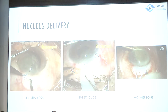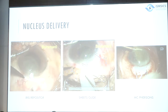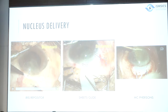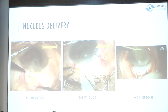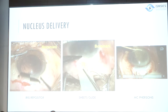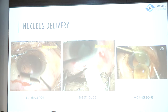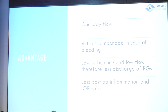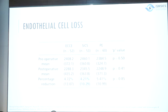Dr. Michael Blumenthal originally described nucleus delivery using an iris repositor, pressing the posterior lip of the wound repeatedly. Bleeding from the wound is managed because fluid flows inside-out, preventing blood from entering the anterior chamber. An iris repositor can also be replaced with a McPherson's, which can deliver even hard brunescent cataracts. The AC maintainer provides one-way flow, acts as a tamponade in bleeding, and causes low turbulence and low flow — resulting in less prostaglandin release and less post-op inflammation and IOP spikes.